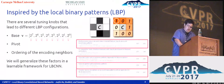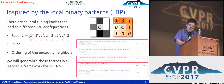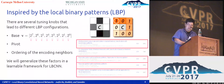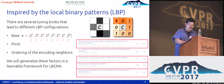The new LBC layer is inspired by LBP. There are several parameter settings that lead to different LBP configurations, such as the choice of base and pivot, and ordering of the encoding neighbors. We generalize these factors in a learnable framework for LBCNN.